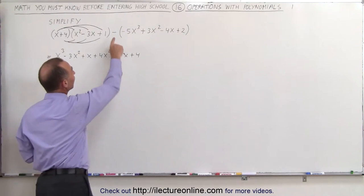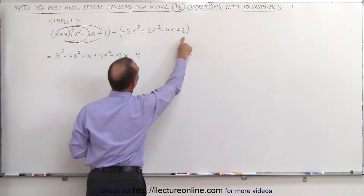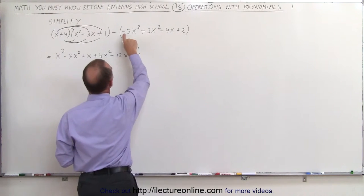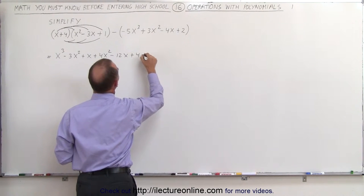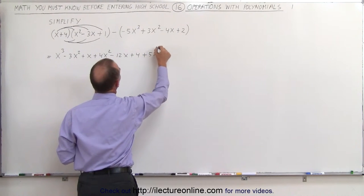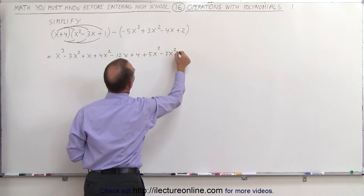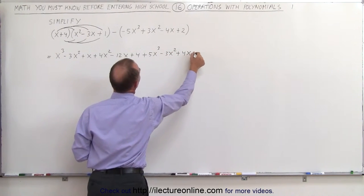Now we're also going to apply this negative sign to everything inside the parentheses here, which means we're going to change the sign of what's inside here. This negative times the negative becomes a positive, so this becomes plus 5x cubed minus 3x squared plus 4x minus 2.